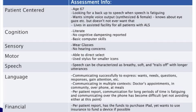In the sensory domain, she wears glasses for reading but has no hearing concerns. Regarding motor, she was able to direct select, and she used a stylus for smaller icons, but was able to use the built-in keyboard on the iPad just fine. Regarding speech, it could be characterized as breathy, soft, and trails off with longer utterances. Language-wise, she was communicating successfully to express wants, needs, and questions. The main place she was having communication breakdowns was in the community with less familiar communication partners and over the phone. Per the patient's report, communication for long periods of time was fatiguing, and communicating over the phone was the most difficult, yet she was not avoiding it at this point.